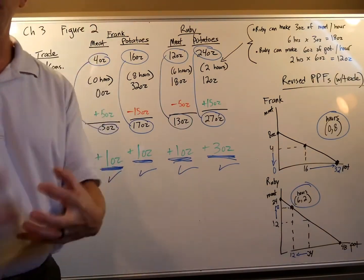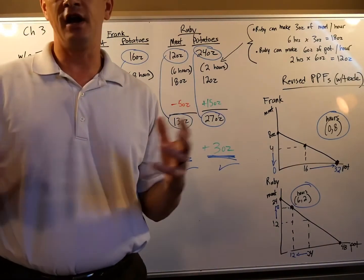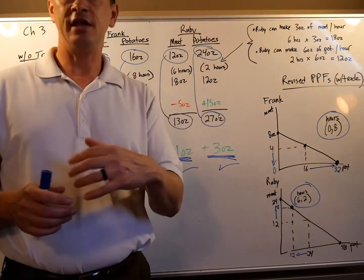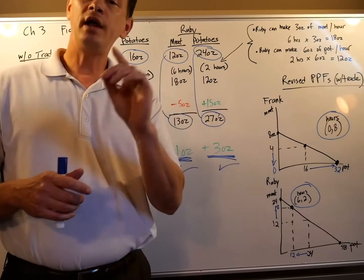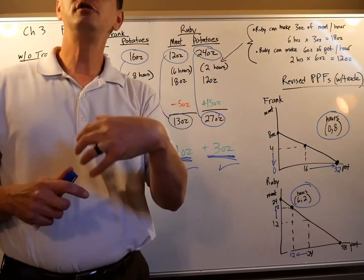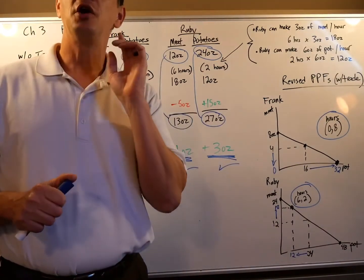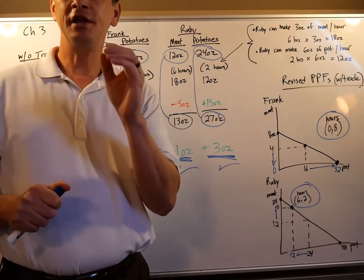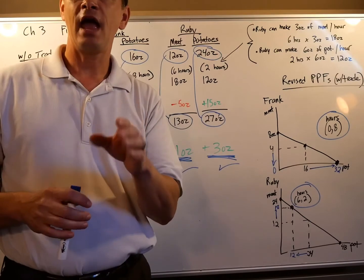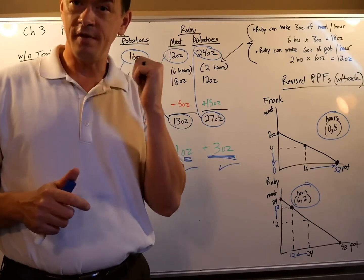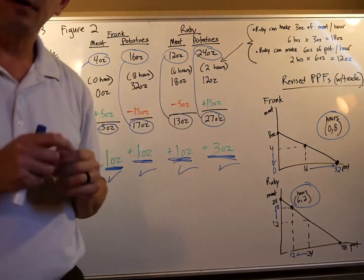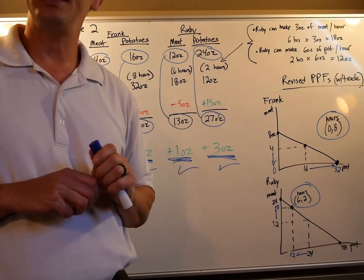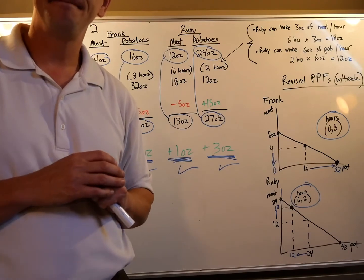Trade can make everyone better off. But all we've talked about so far is absolute advantage - being more productive doesn't mean you should make everything. What determines what you should make is called comparative advantage. In video three, we'll break down how Ruby came up with this idea based on comparative advantage. Come back for video three to learn what comparative advantage is and how she applied it.